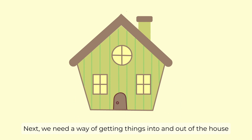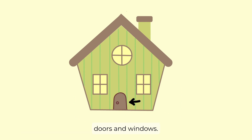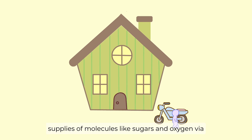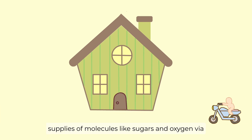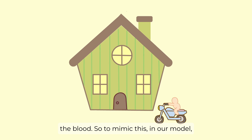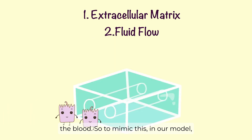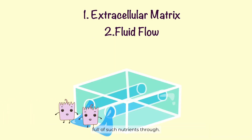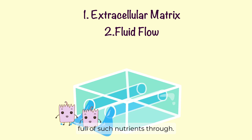Next, we need a way of getting things into and out of the house — doors and windows. Cells in the body are always getting fresh supplies of molecules like sugars and oxygen via the blood. So, to mimic this in our model, we make tube-shaped structures to flow liquids full of such nutrients through.